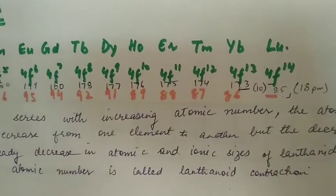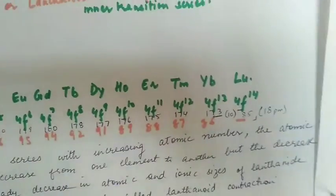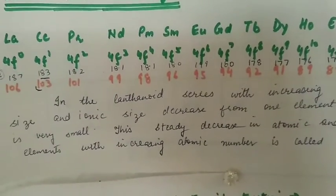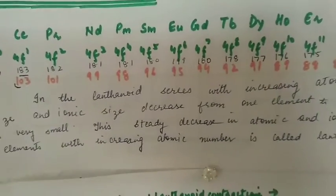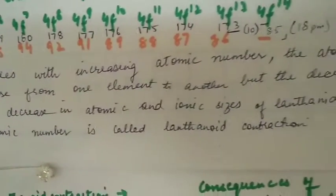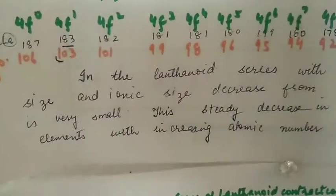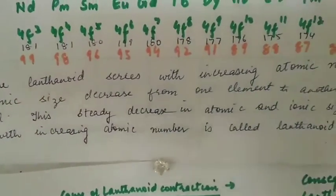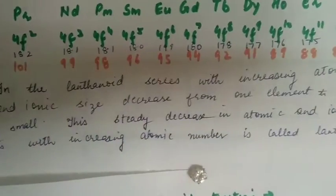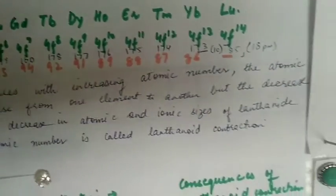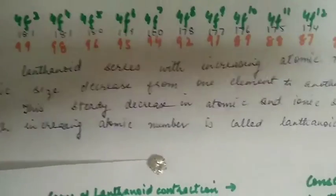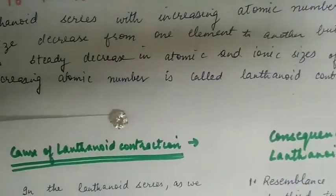Although the decrease is very small in nature, just about 18 picometers, this decrease is called lanthanoid contraction. So in the lanthanoid series with increasing atomic number, the atomic and ionic size decrease from one element to another. The steady decrease in atomic and ionic sizes of lanthanoid elements with increasing atomic number is called lanthanoid contraction.